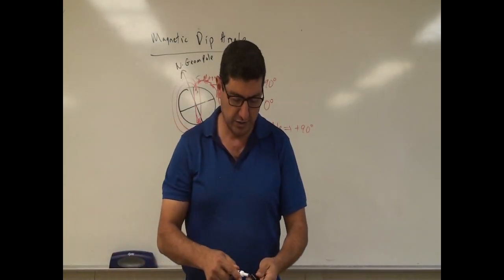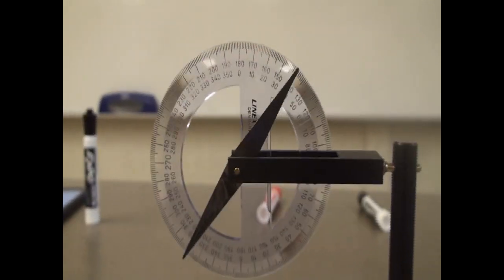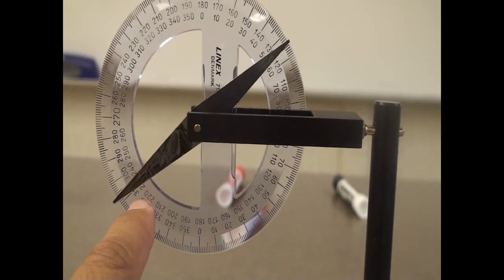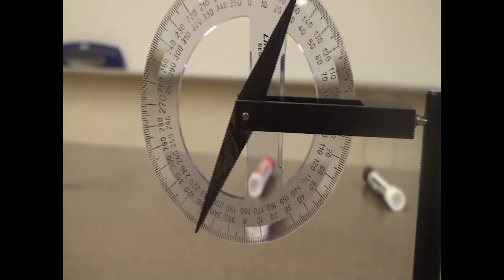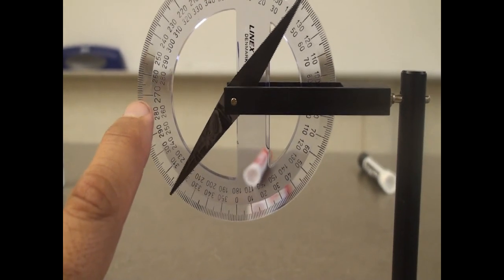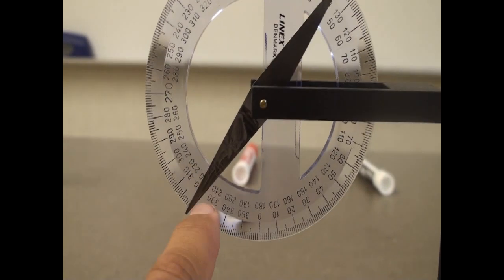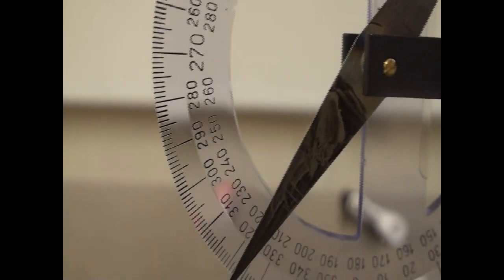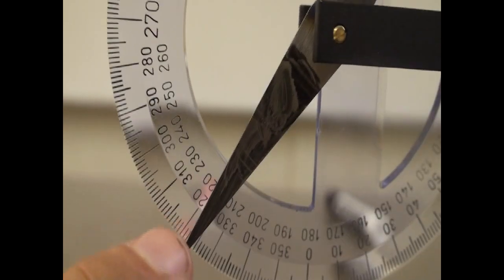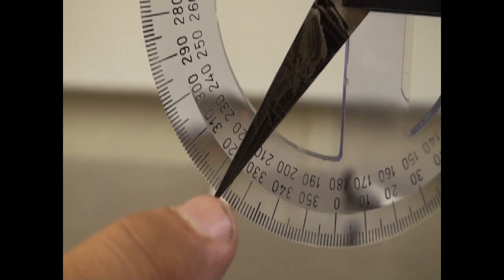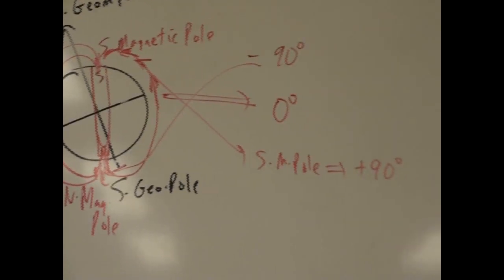Now let's check the dip angle here for Los Angeles. You can see the compass is pointing into the ground. If we were at the Earth's equator, this compass would point straight toward the North Geometric Pole — horizontal. But here it's actually facing down. Looking closer, the dip angle reads about 10, 20, 30, 40, 50 — about 51 to 52 degrees. Since we're above the Earth's equator, by convention that's positive 52 degrees.